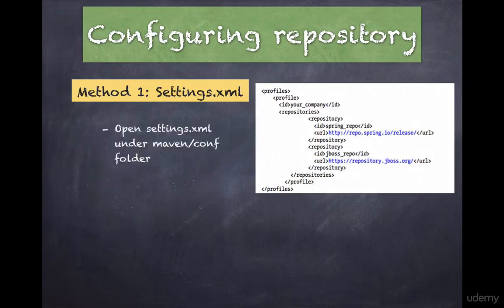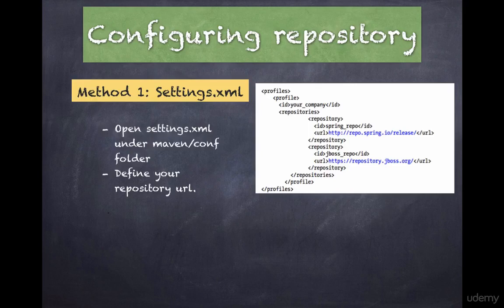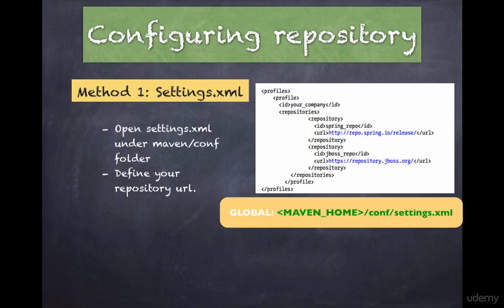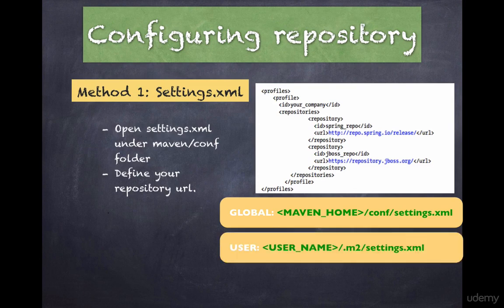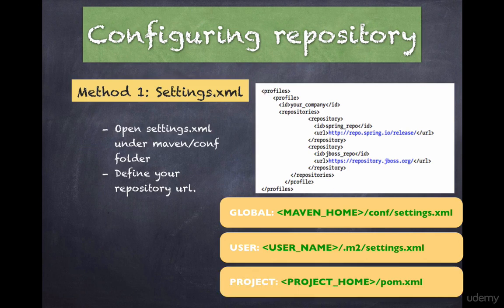Maven maintains configuration at three different levels: global, user, and project. The global level configuration is maintained at maven home/conf/settings.xml. The user level is maintained under your username/.m2/settings.xml, and the project level is maintained under your project/pom.xml.